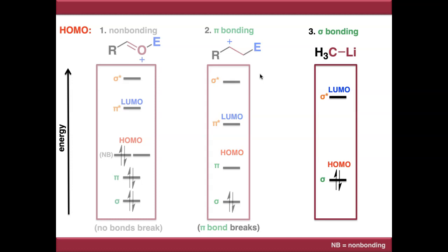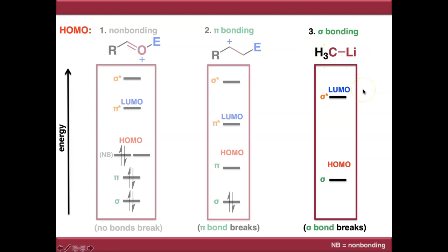Analogously, the same happens with a sigma bonding orbital HOMO. If you push electrons out of the sigma bonding orbital, the sigma bond will break. A new sigma bond forms to one of the two atoms — either carbon or lithium — and the other is left electron deficient. We'll discuss how to predict which atom in a later video.